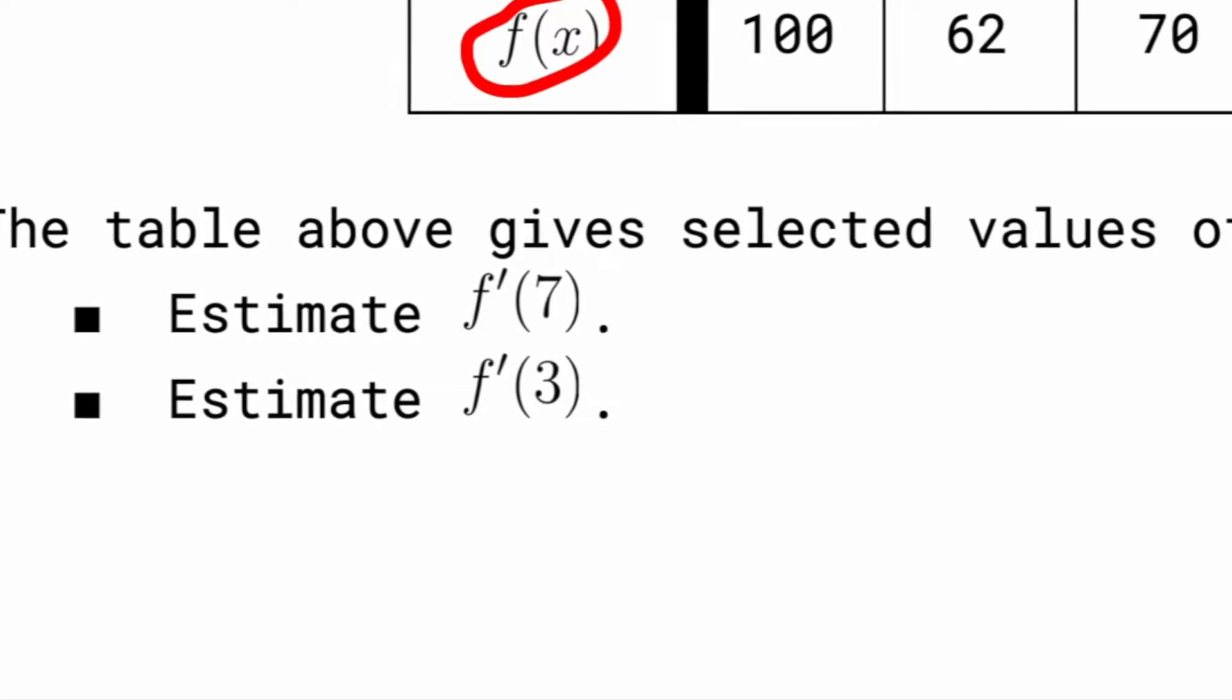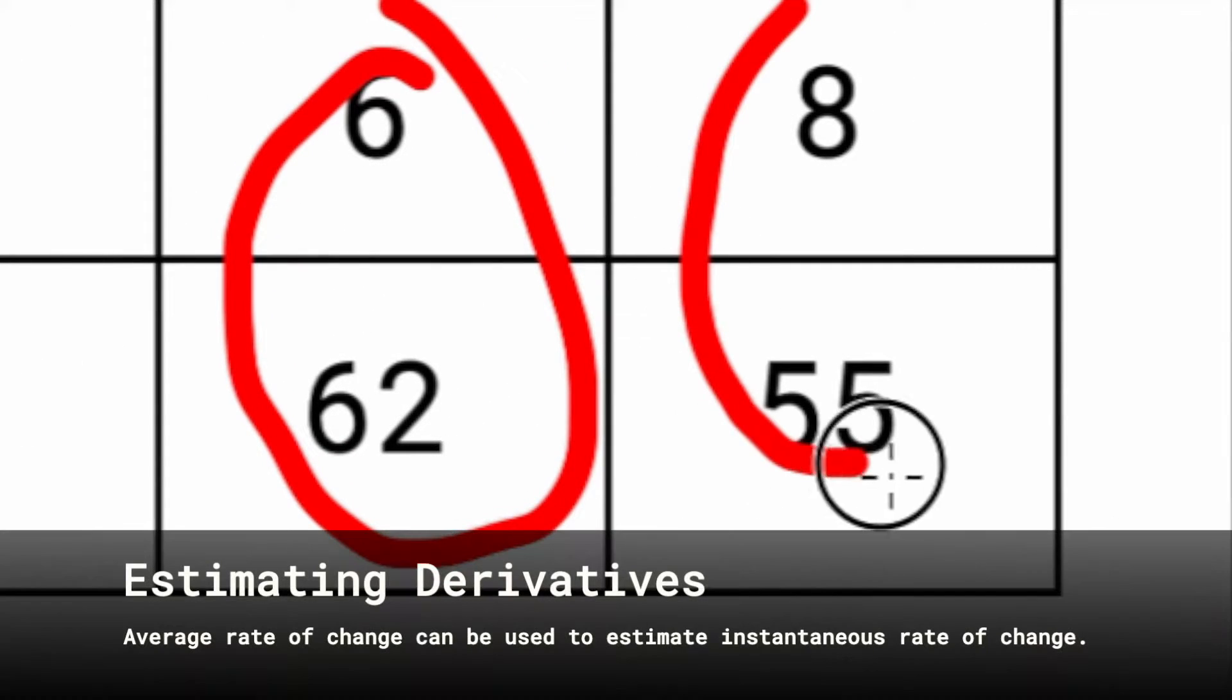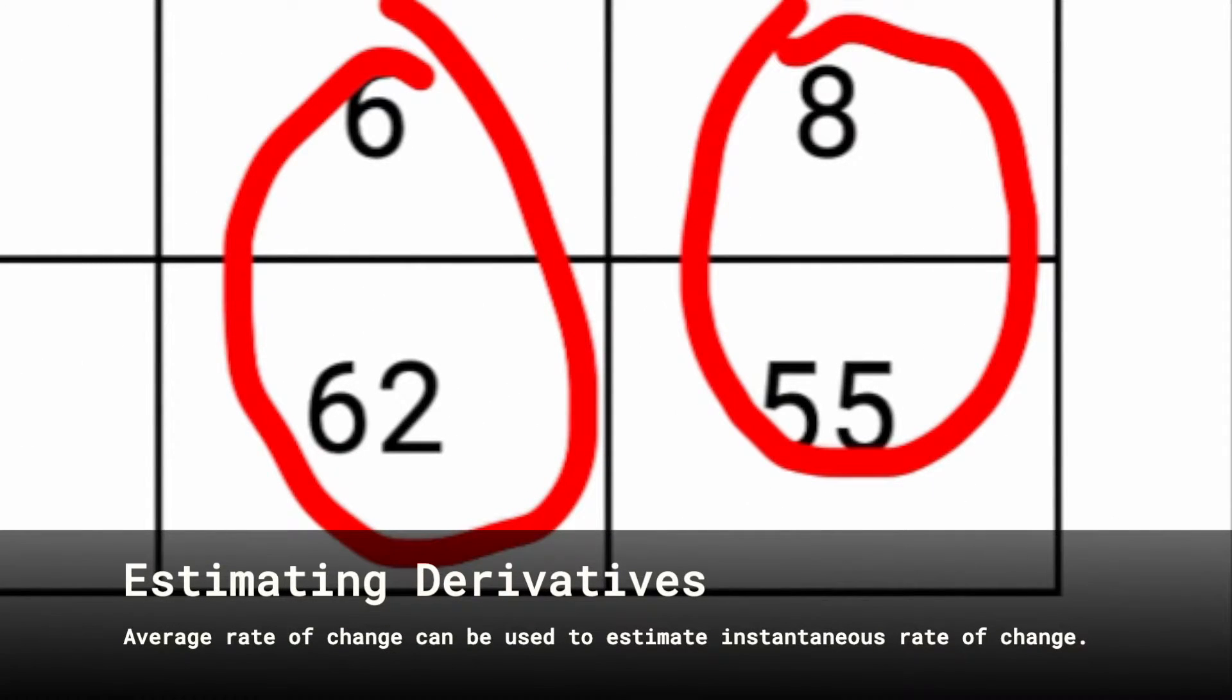It says estimate f'(7). We're going to use the values between x equals 6 and x equals 8 to figure out the average rate of change and use that as an estimate for f'(7).